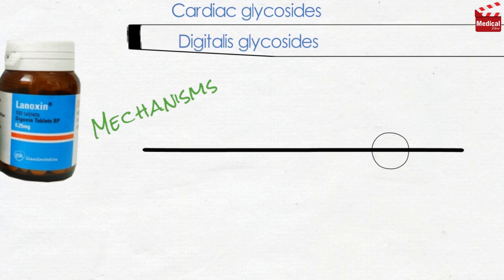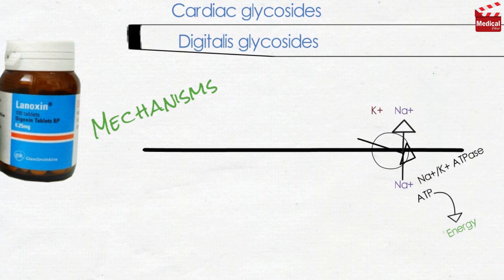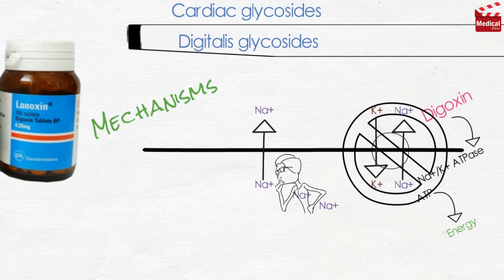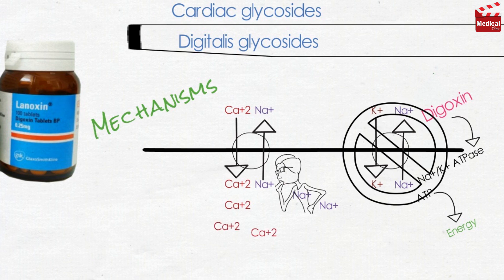Now let's discuss the exact mechanism of digoxin at a cellular level. There is a membrane-bound catalytic enzyme called sodium-potassium ATPase. This enzyme hydrolyzes ATP to produce energy, and this energy is needed for sodium to get out of the cell in exchange with potassium. Digoxin inhibits this enzyme, so intracellular sodium concentration will increase. Cardiac fibers then exchange the intracellular sodium for extracellular calcium, extruding sodium in exchange with calcium without consuming energy.